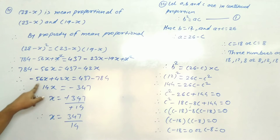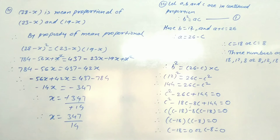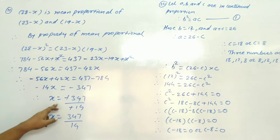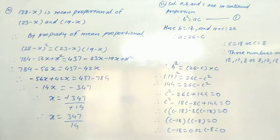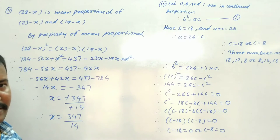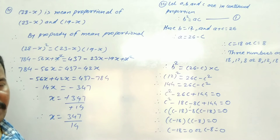Rearranging: minus 56x plus 42x equals 437 minus 784, giving minus 14x equals minus 347. The negatives cancel, so x is equal to 347 divided by 14. This is the final answer.